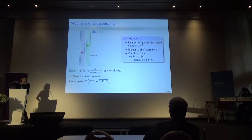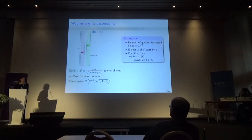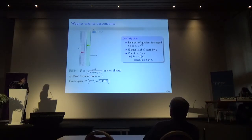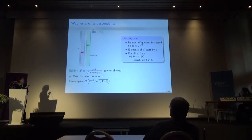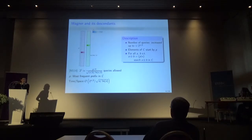Later, in 2014, Nikolic and Sasaki proposed a way to improve this algorithm. They say that if you slightly reduce the number of queries compared to Wagner's — to 2 to the l satisfying a certain quantity — you can choose P to be the most frequent prefix in your list C of size 2 to the l, where P would be an l-bit prefix. They obtain a speedup of square root of n divided by the natural logarithm of n compared to Wagner's algorithm.